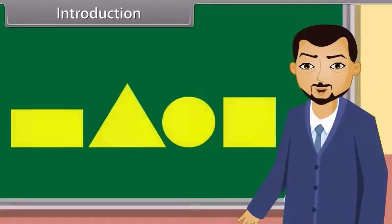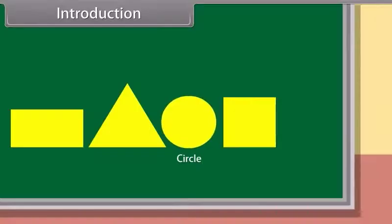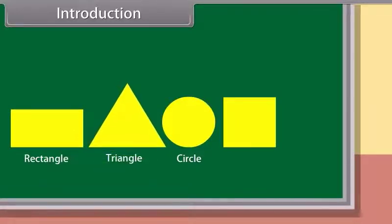I will draw some shapes on the blackboard. You have to tell me their names. This is a circle. And this is a rectangle. This is a triangle. And this is a square, sir.